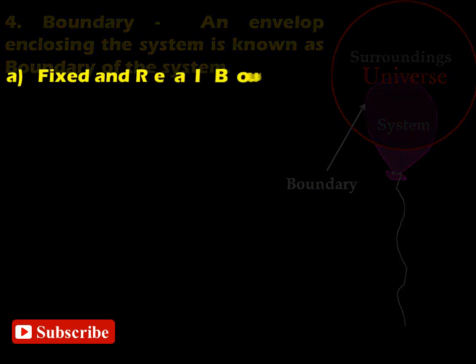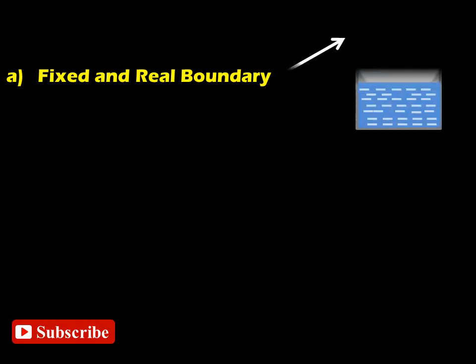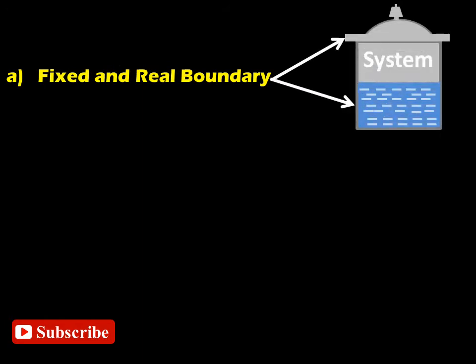A. Fixed and real boundary. The surface of the pressure cooker is the boundary for the steam inside the cooker. As the surface of the pressure cooker exists physically, so this type of boundary is known as real boundary.